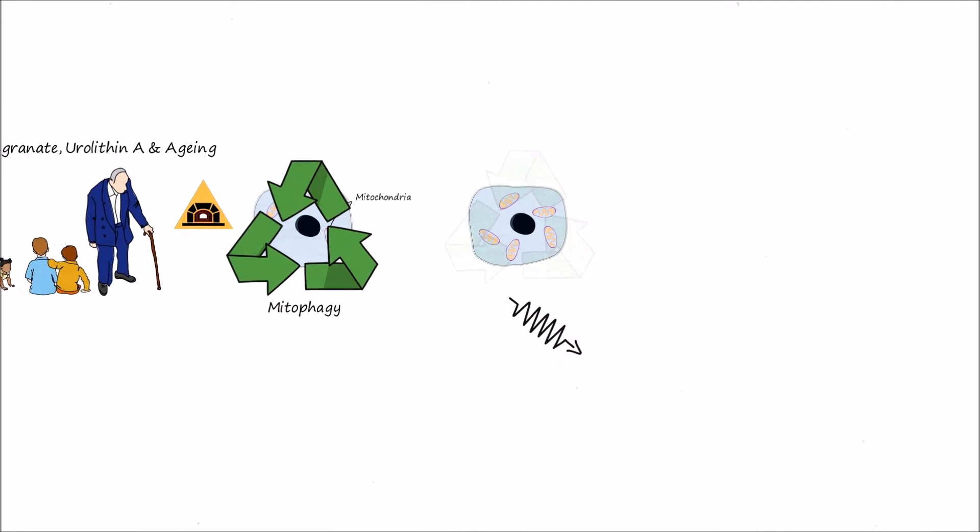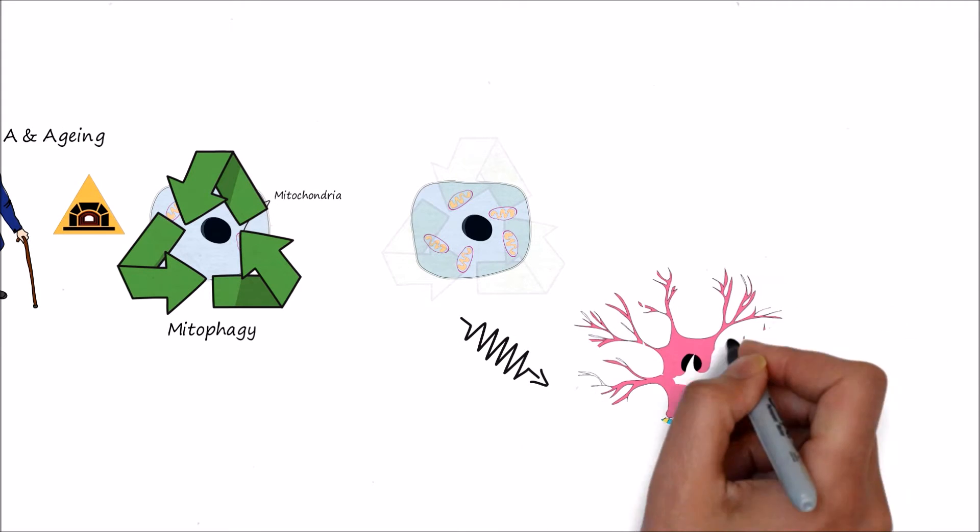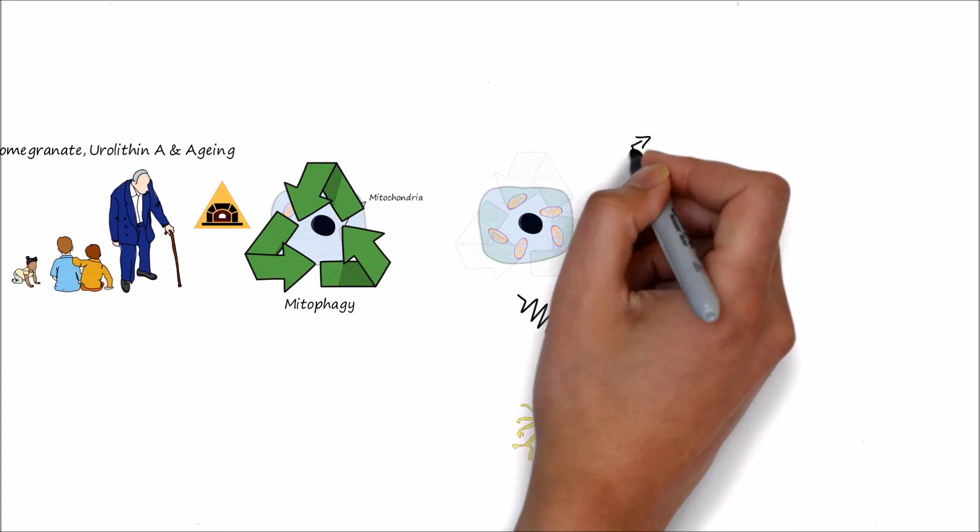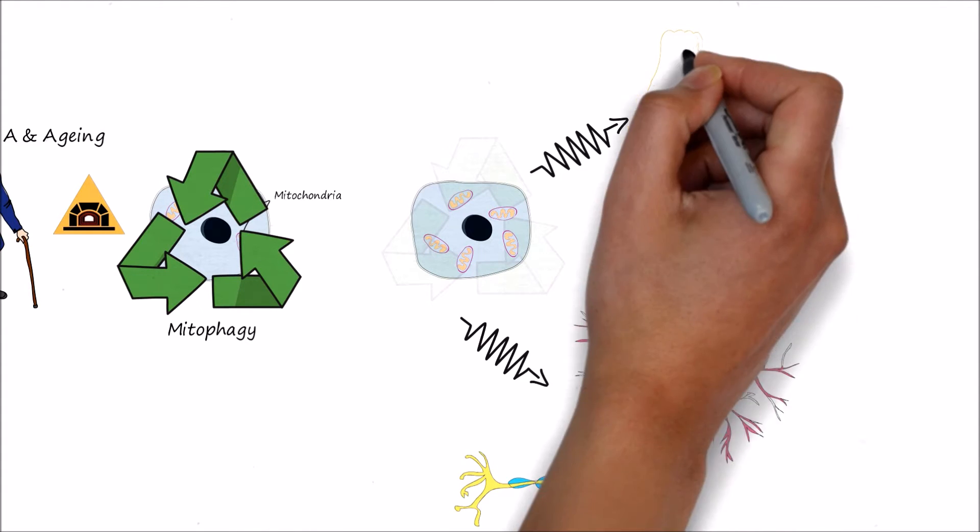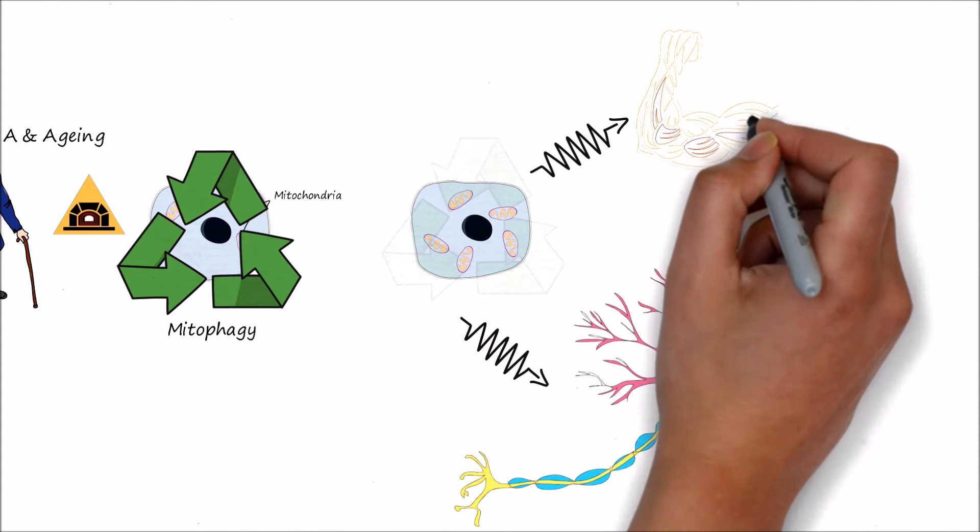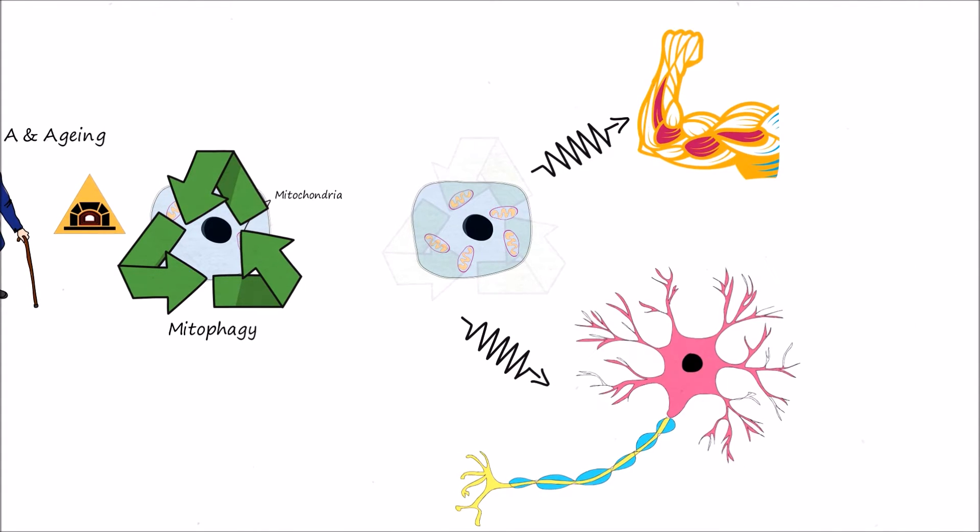This dysfunctional mitochondria greatly diminishes the functionality of our neurons and muscles because they are the biggest energy consumers in our body. That's why old age comes with weakness and forgetfulness.